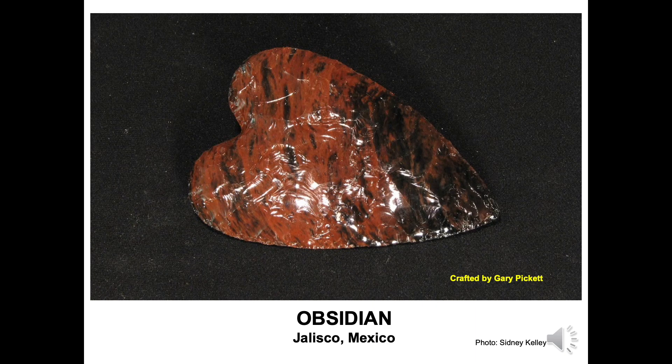There are a handful of natural solid substances that don't have a definite crystalline structure, such as opal and obsidian. These are called mineraloids rather than minerals. Pictured is the beautiful volcanic glass known as obsidian crafted into a heart.